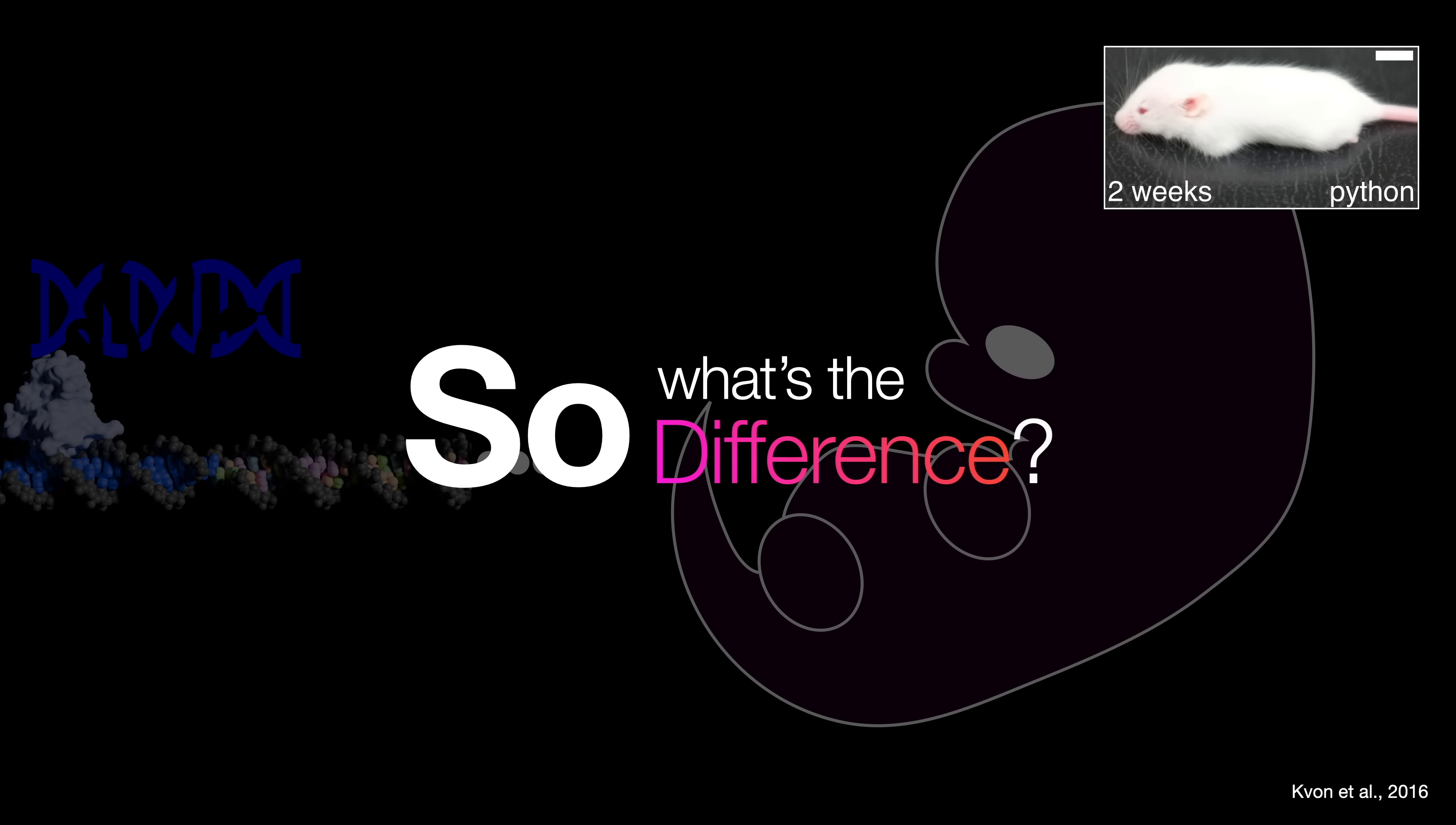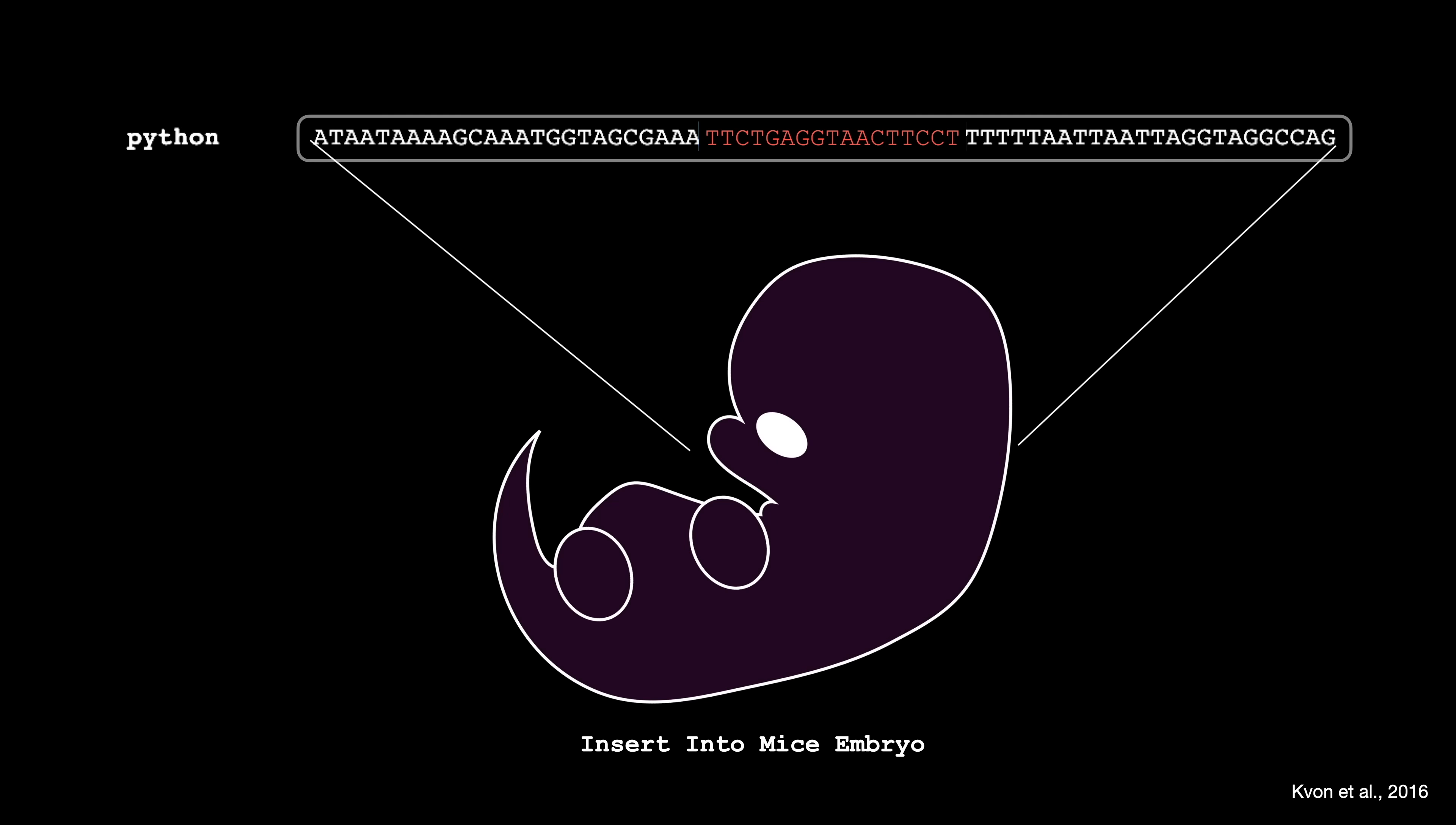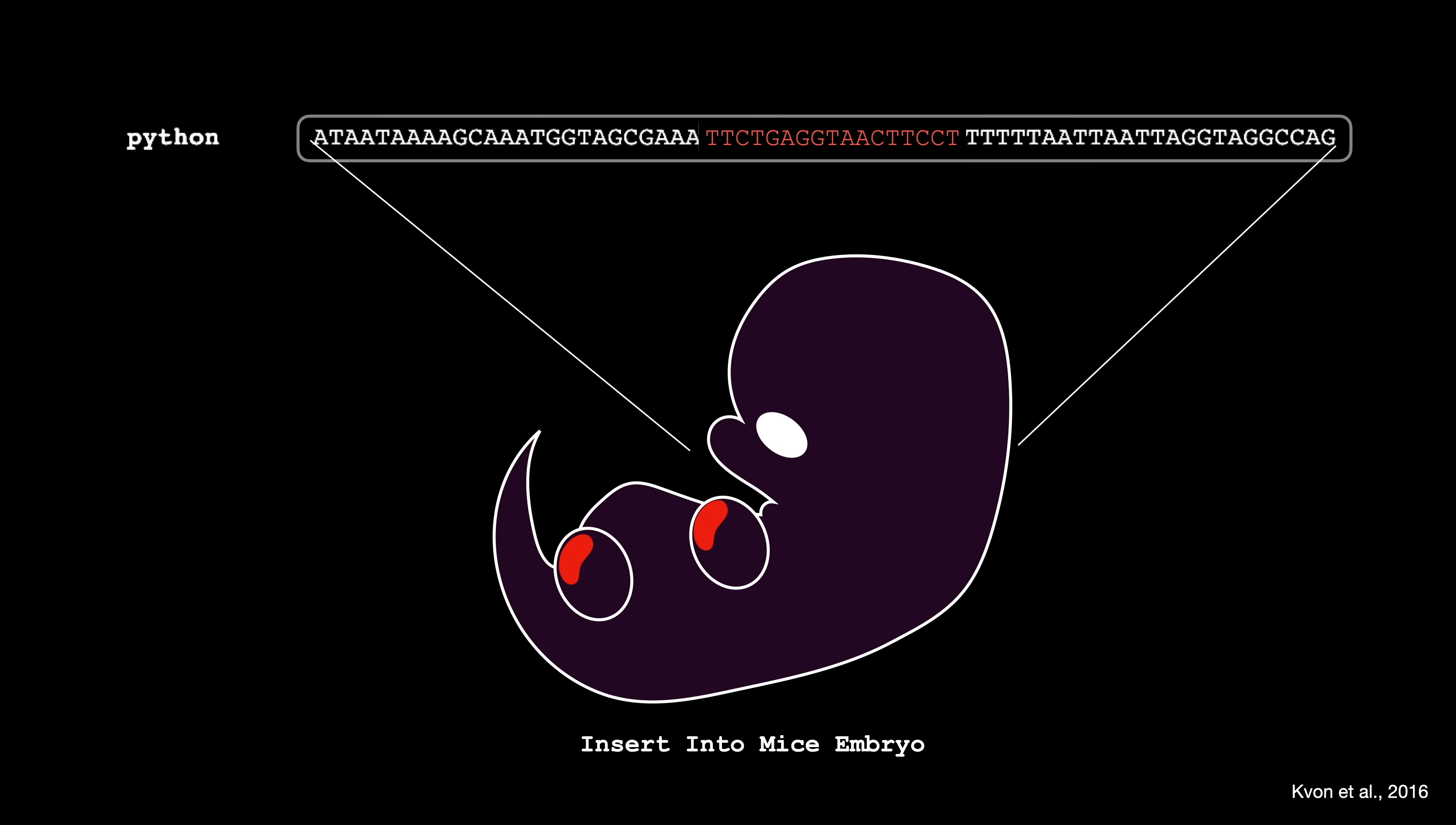So what's the difference? Well, all snakes are missing 17 letters of DNA within this region. Amazingly, if you insert these 17 missing bases back into a python's control box, and then put that into a mouse as before, the mouse will grow legs as if nothing happened.